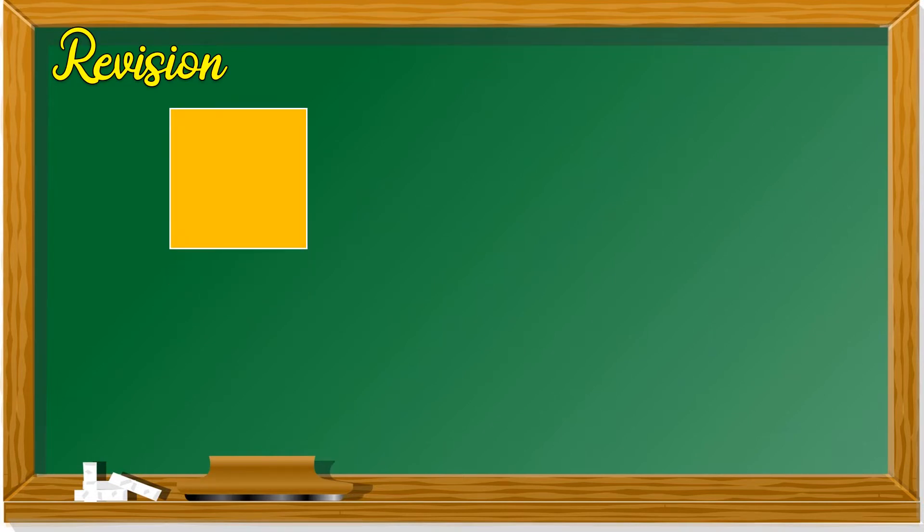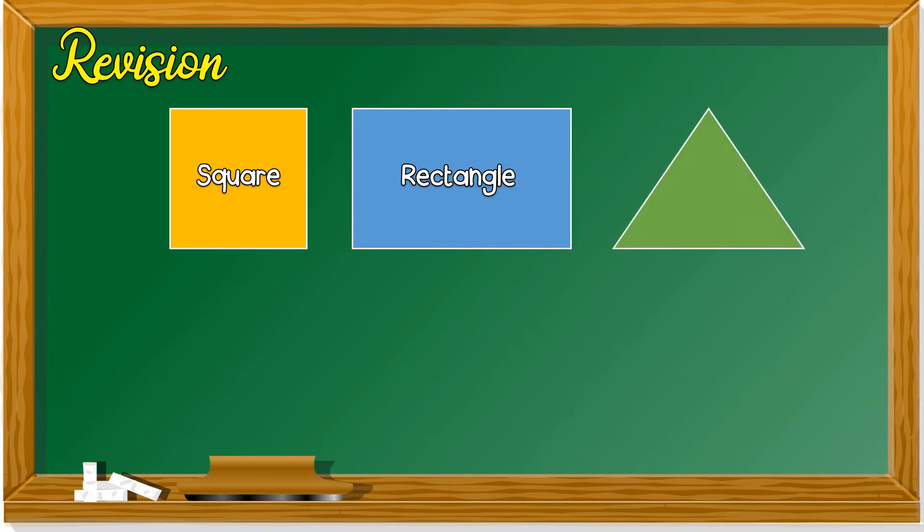Before we proceed, let's do some revision on 2-dimensional and 3-dimensional shapes. What is this shape? It's a square. How about this shape? A rectangle. This one is a triangle.